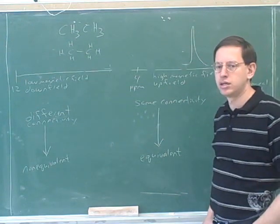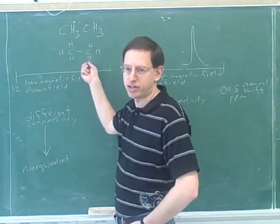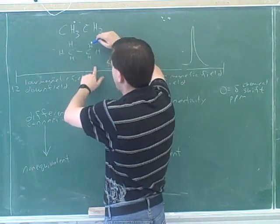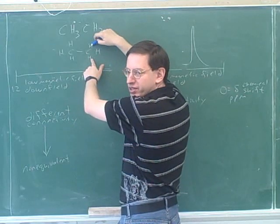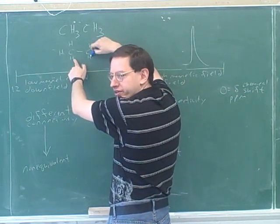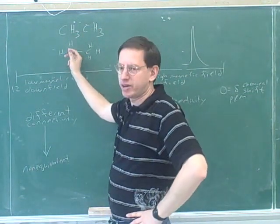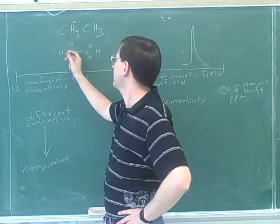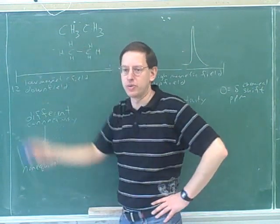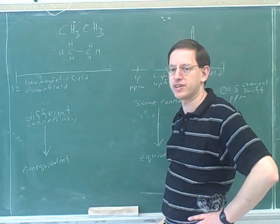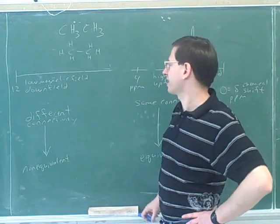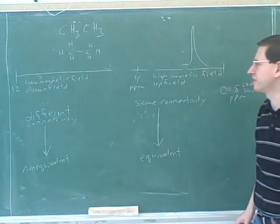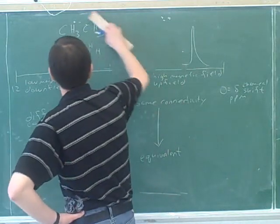All the hydrogens here are equivalent — we already decided that these two were equivalent, and these two as well. All the hydrogens on the left-hand carbon are equivalent to the hydrogens on the right-hand carbon, so there are no hydrogens that are different from each other. This will be clearer once we see an example with non-equivalent hydrogens. So this would again have just one peak.